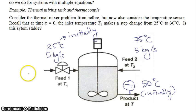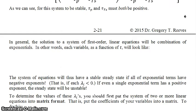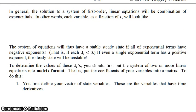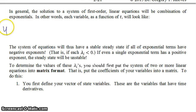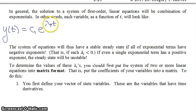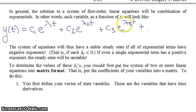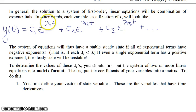Without going through the derivation of all the equations, we're going to jump ahead to the end of the example and talk about the general things we can take out of the stability analysis for systems of linear first order differential equations. When you have each variable in your system and you solve it as a function of t, it will look something like this: y of t equals a linear combination of exponentials — c1 e to the lambda-1 t, plus c2 e to the lambda-2 t, plus c3 e to the lambda-3 t, and so on. The number of exponentials equals the number of equations in your system. Every variable will look something like this with different values of c, but the lambdas will be the same.